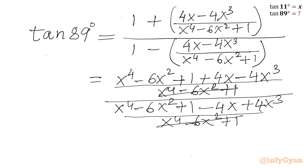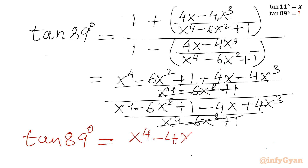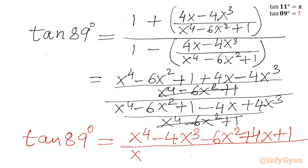So tan 89 degrees equals x to the power 4 minus 4x cubed minus 6x squared plus 4x plus 1, all divided by x to the power 4 plus 4x cubed minus 6x squared minus 4x plus 1. This is our final answer.